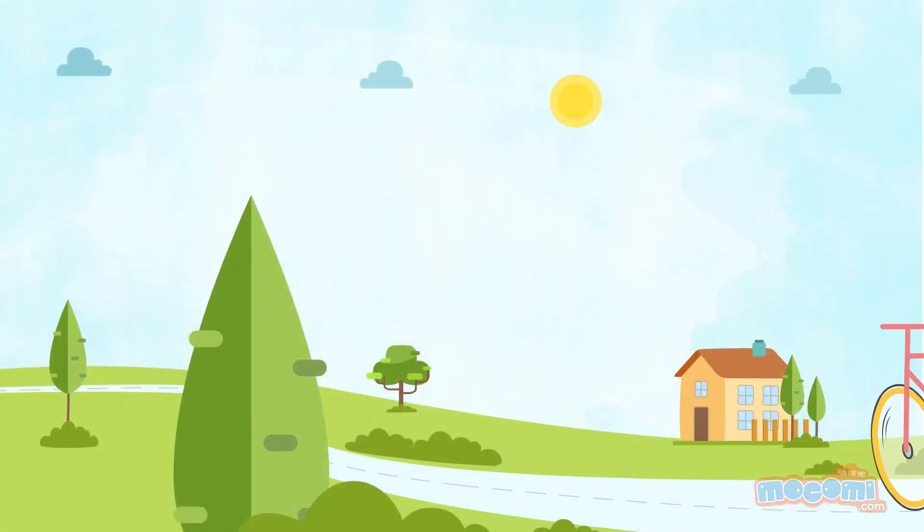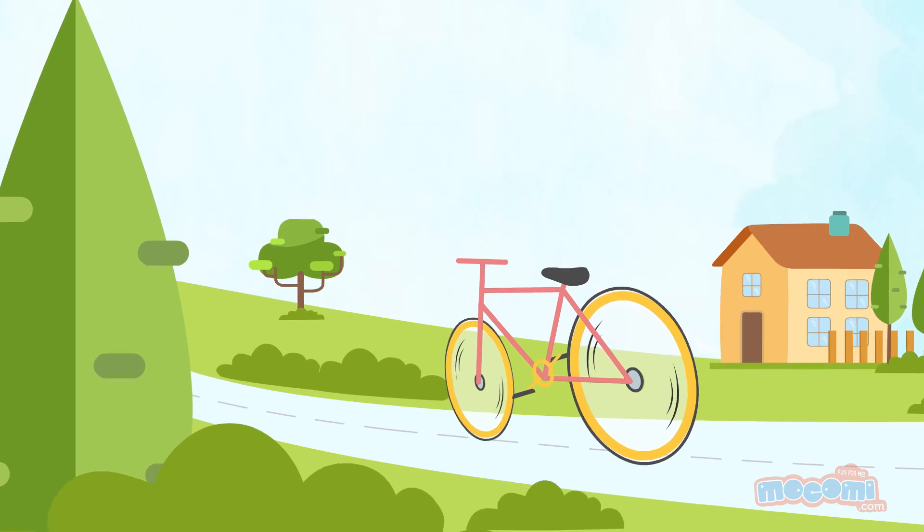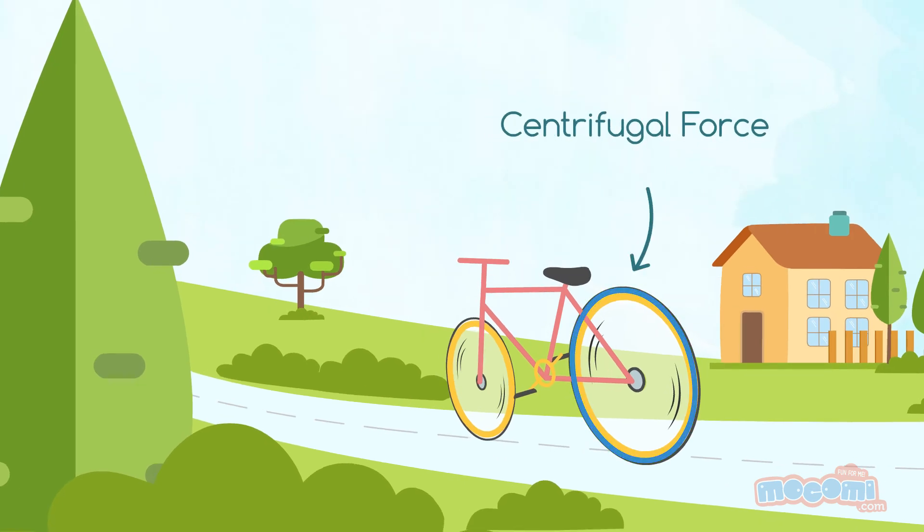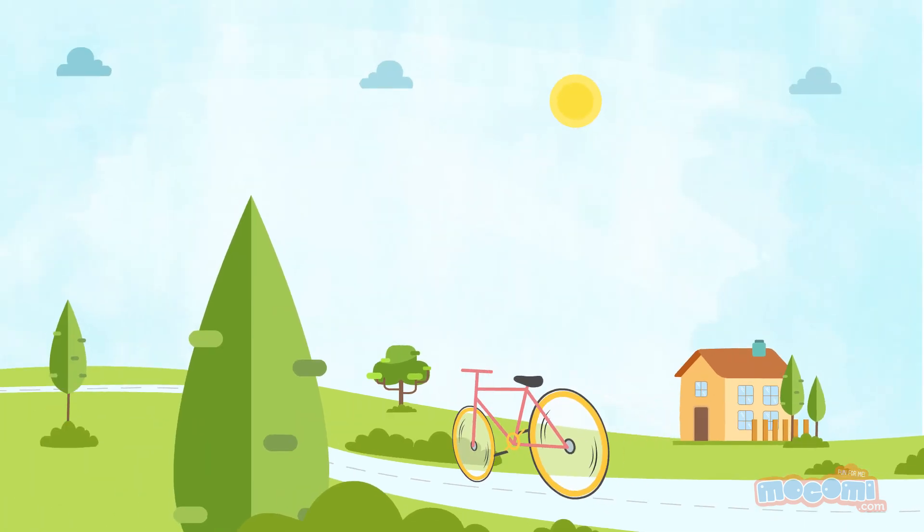So when the bicycle starts moving to the left, the centrifugal force of the back wheel would keep it in check because it is still moving straight. The wheel would automatically snap the bike to the right and keep it upright.